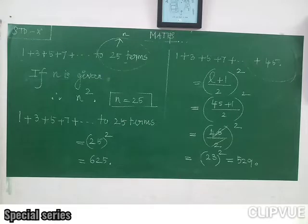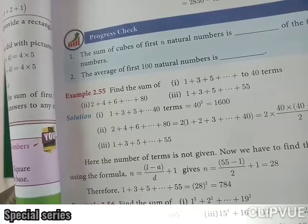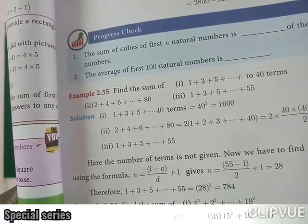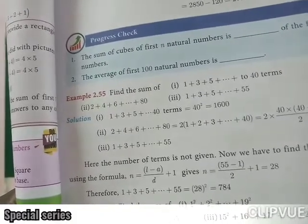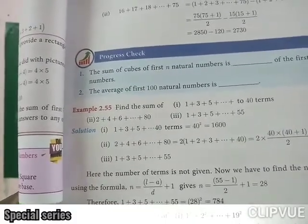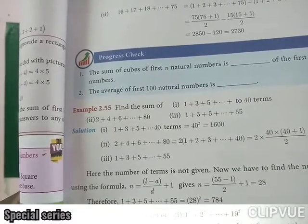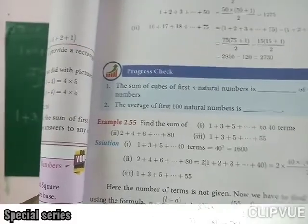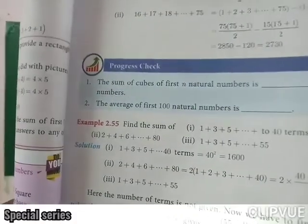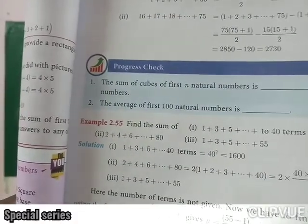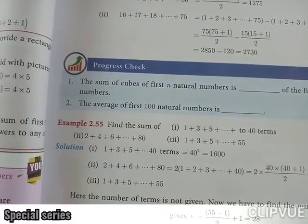Look at example number 2.55. Find the sum of the first case: 1 plus 3 plus 5 plus and so on, 40 terms. Solution: n is equal to 40 is given. So n square, which means 40 square is equal to 1600. This is the answer: 1600.